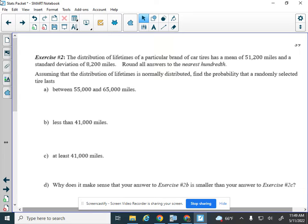So this one says the distribution of lifetimes of a particular brand of car tires has a mean of 51,200 miles and a standard deviation of 8,200. We're going to round all answers on this page to the nearest hundredth. Assuming that the distribution of lifetimes is normally distributed, find the probability that a randomly selected tire lasts these times. So we see this, and we see probability, and we know we're using normal CDF.